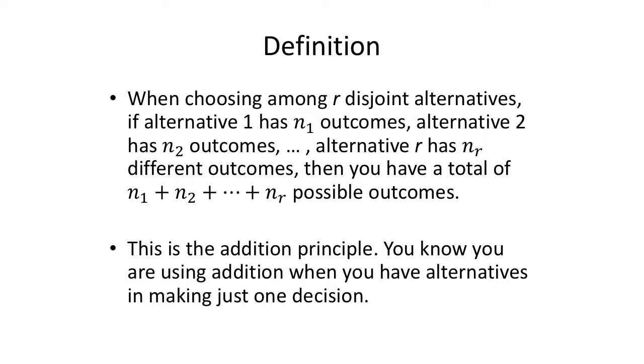So, Decision Algorithms. Let's start with the Addition Principle. When choosing among our disjoint alternatives, if alternative 1 has n sub 1 outcomes, alternative 2 has n sub 2 outcomes, and so on, then you'll have a total of n1 plus n2 plus and so on, n sub r possible outcomes. Addition Principle.